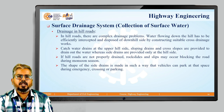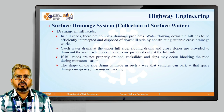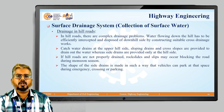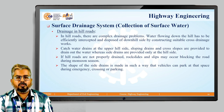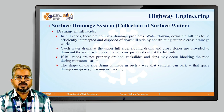Then we have drainage in hill roads. In hill roads there are complex drainage problems, and providing a drainage system in a hill area is very costly. Water flowing down the hill has to be efficiently intercepted and disposed of on the downhill side by constructing suitable cross drainage works. Catch water drains at the upper high hillside, sloping drains and cross slopes are provided to drain out the water, whereas side drains are provided only at the hillside. If hill roads are not properly drained, rock slides and slips may occur, blocking the road during monsoon season. The shape of side drains is made such that vehicles can park on that space during emergency crossing or parking.